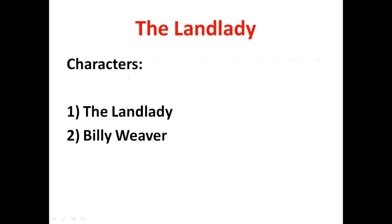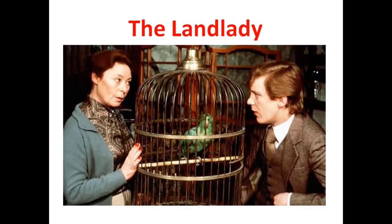In this short story, we have two main characters. The first one is the land lady, and the other character is Billy Beaver. Now, you can see the two main characters — the two main protagonists. Billy Beaver is a young man of 17 years of age, while the age of the land lady is almost 45 or 50 years.